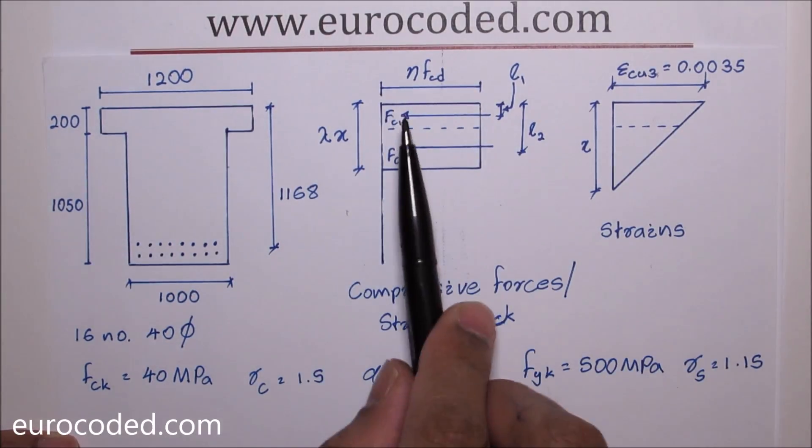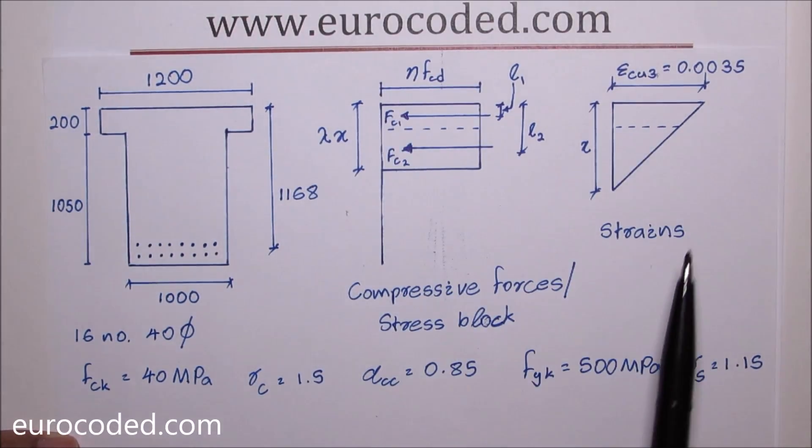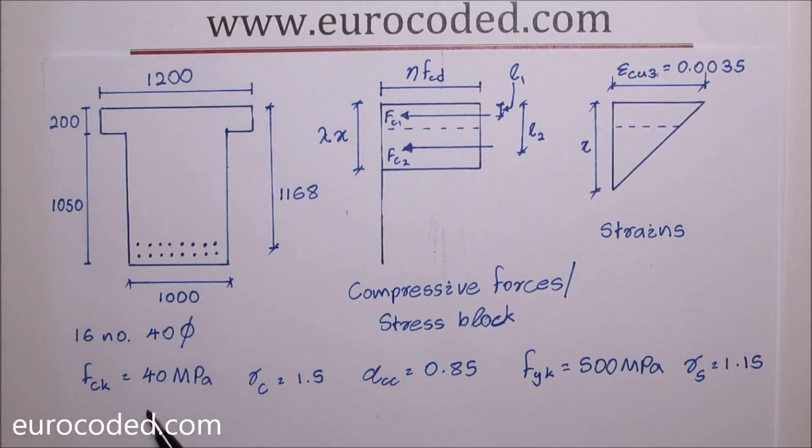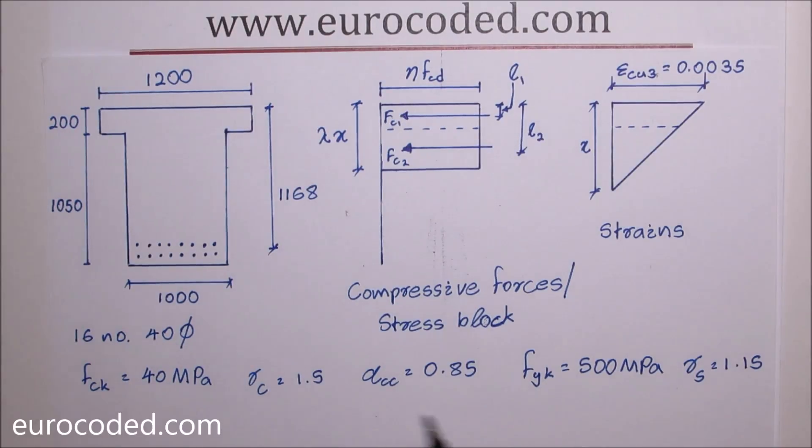We are using rectangular stress block for this example. I've drawn that stress block and the compressive forces, also the strains diagram here. FCK is 40 megapascal. Gamma C is 1.5.